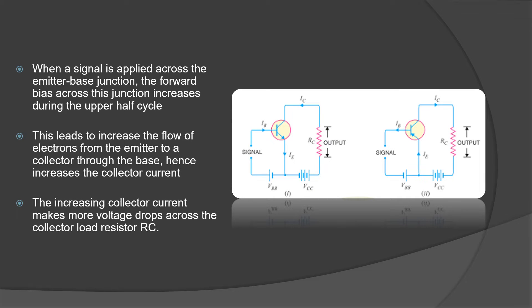When the input signal is applied across the emitter-base junction, it gets forward biased across the junction. As a result, there is an increase during the upper half cycle. This leads to increase in the flow of electrons from the emitter to the collector through the base. As a result, there is an increase in collector current. This increasing collector current makes more voltage drop across the collector load resistor RC.